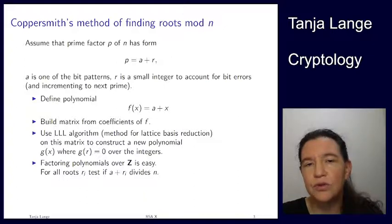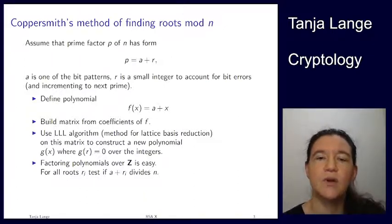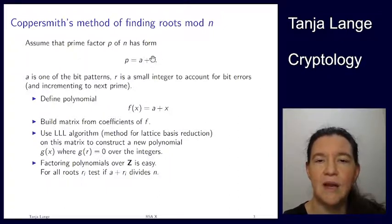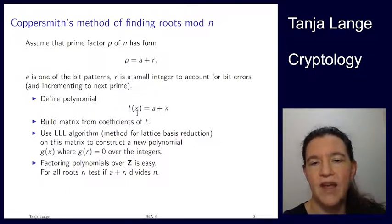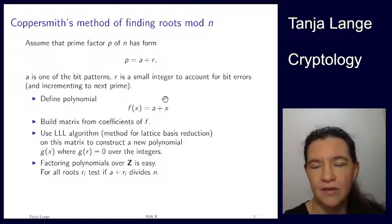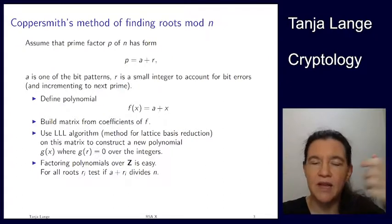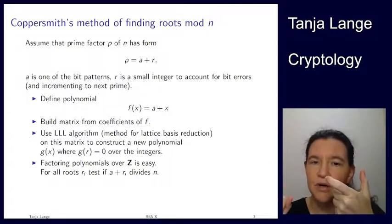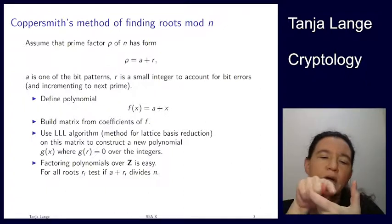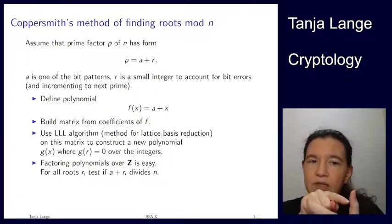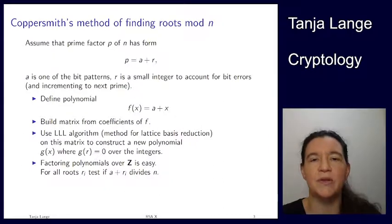If you have a small root here of this polynomial, say we're looking at the prime p has this form, a known part a and then some unknown part r. We can write this as polynomial f(x) which is a + x, and then this r plays the role of x. This would be a small root if r in this prime p is small. For instance if we look at a being a bit pattern and then r just this bottom part, this is an integer to account for making it prime, affecting the very last bits, and also maybe some bit errors appearing in the last part.